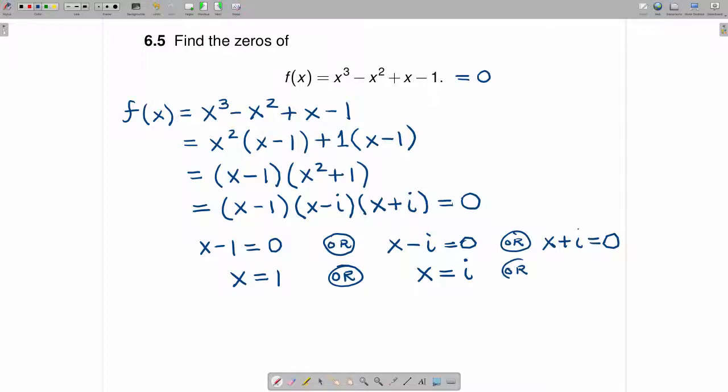And finally, for the last equation, this equation can be solved by subtracting i from each side. When you subtract i from the left-hand side, you get x. When you subtract i from the right-hand side, you get -i.